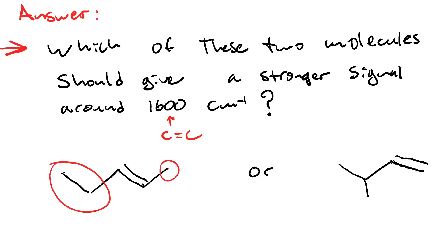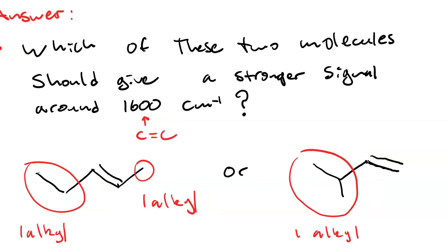The compound on the left is monosubstituted on each side. It's got one alkyl group on the left and one alkyl group on the right. Whereas the compound on the right only has a single alkyl group on one side and no alkyl group on the right. Therefore the compound on the right is less symmetric and hence should have a stronger signal.